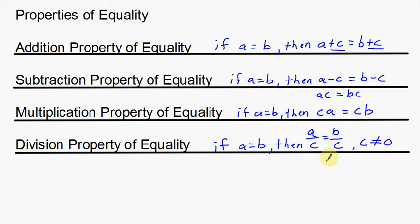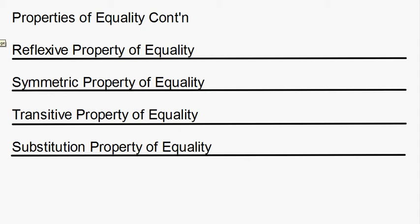Moving on to the next properties — properties of equality continued. We're going over the reflexive property of equality, symmetric property of equality, transitive property of equality, and also the substitution property of equality. These four properties are a little bit more complicated than the first ones, but I'll go over them briefly. The reflexive property of equality: A is equal to A. A number is always going to be equal to itself. That's what the reflexive property is — pretty simple.